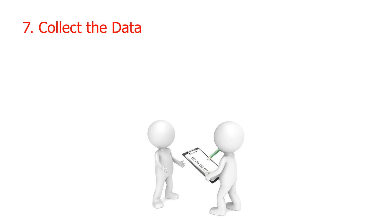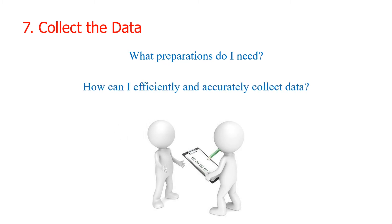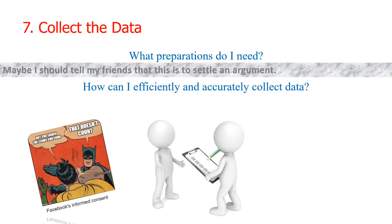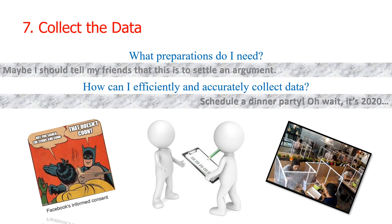Step 7: Collect the data. What preparations do I need? We have to think about proper informed consent, asking for permissions to conduct our research, and training our data collectors. How do we efficiently and accurately collect data? This step is a methodology within a methodology — you detail the recruitment process, physical, political, and safety limitations, and plans if people don't want to respond. For our research, an example of informed consent is telling participants what the research is really about. Gathering our friends in one setting would probably be the most effective data collection approach.